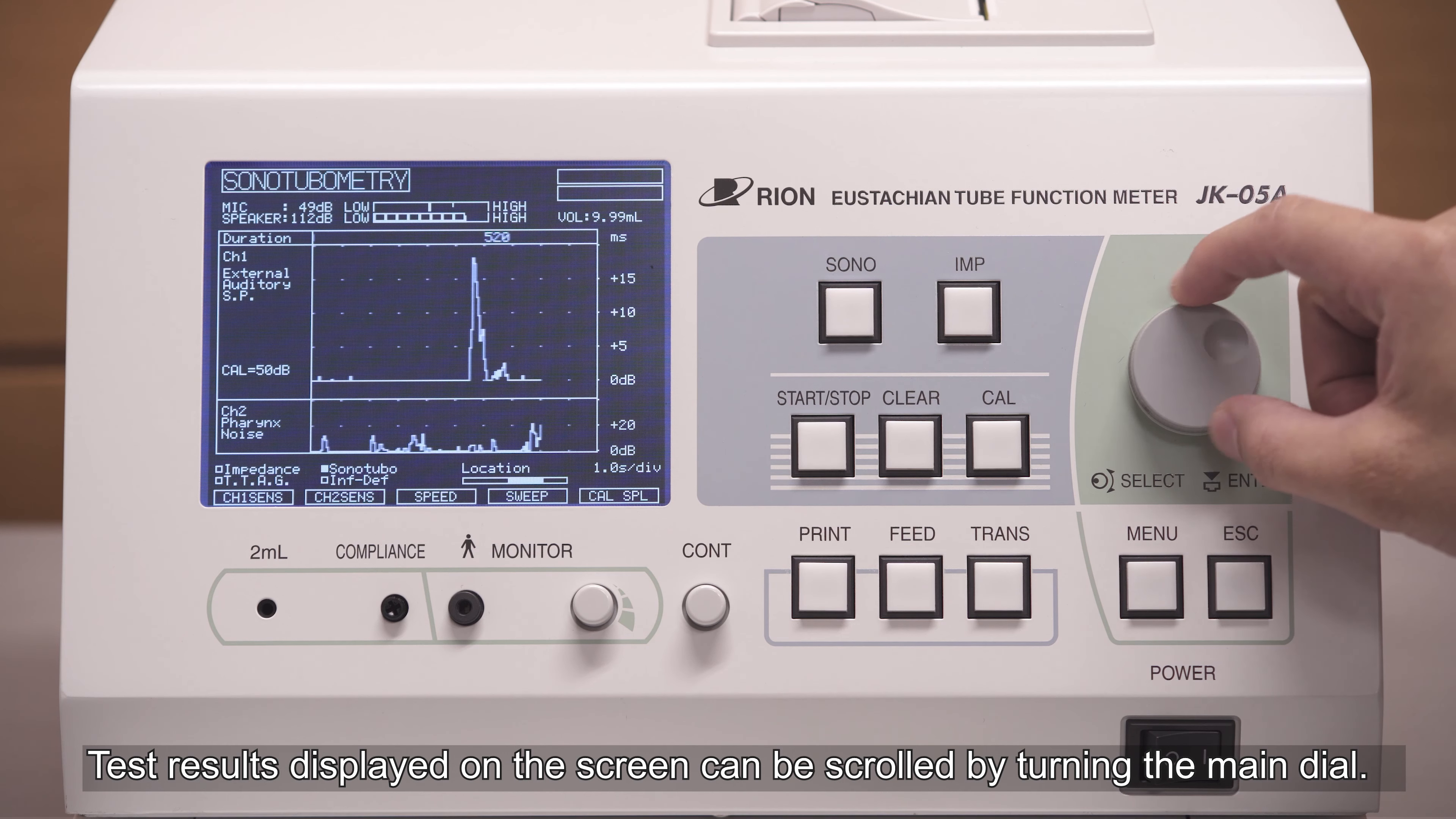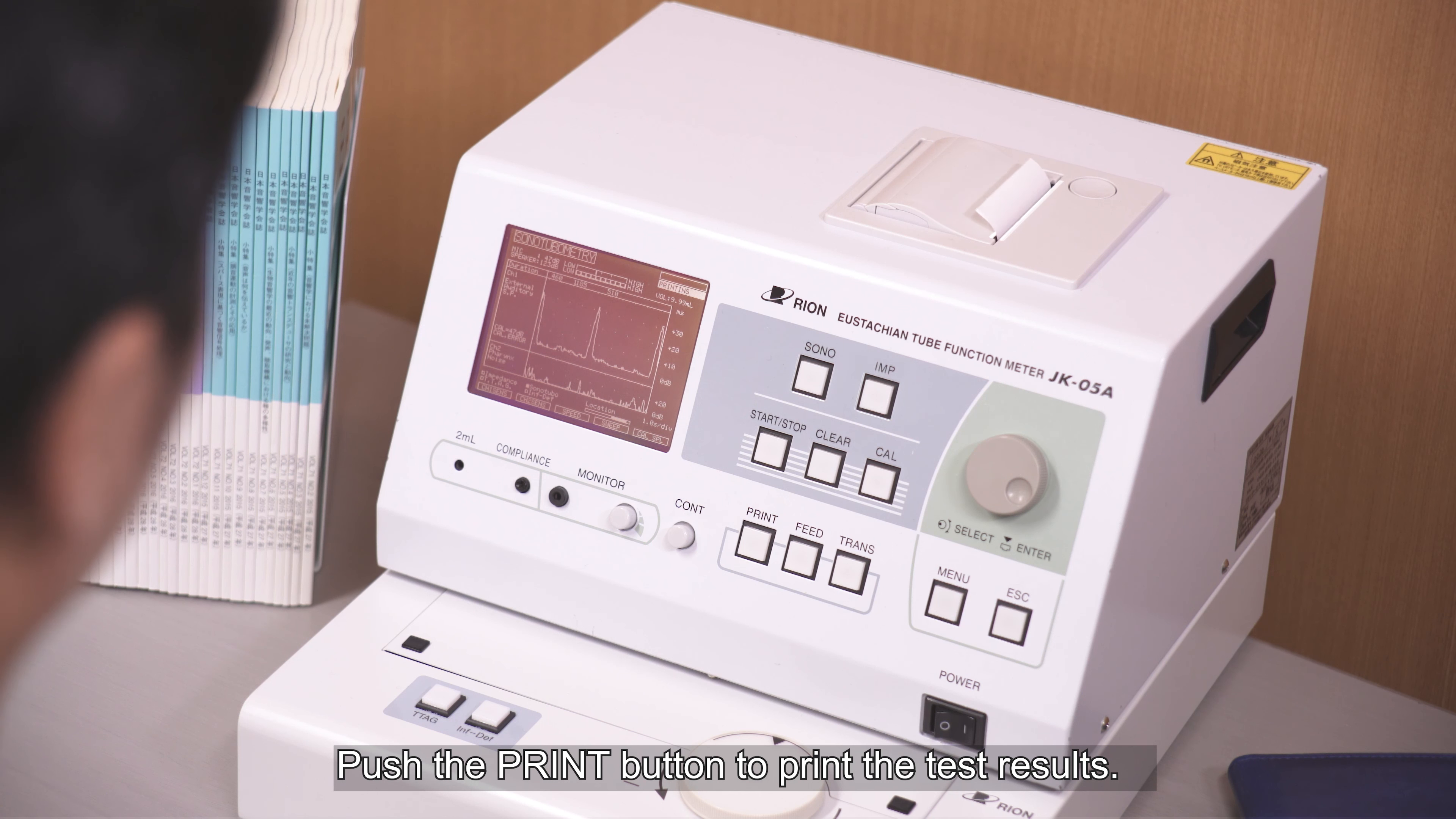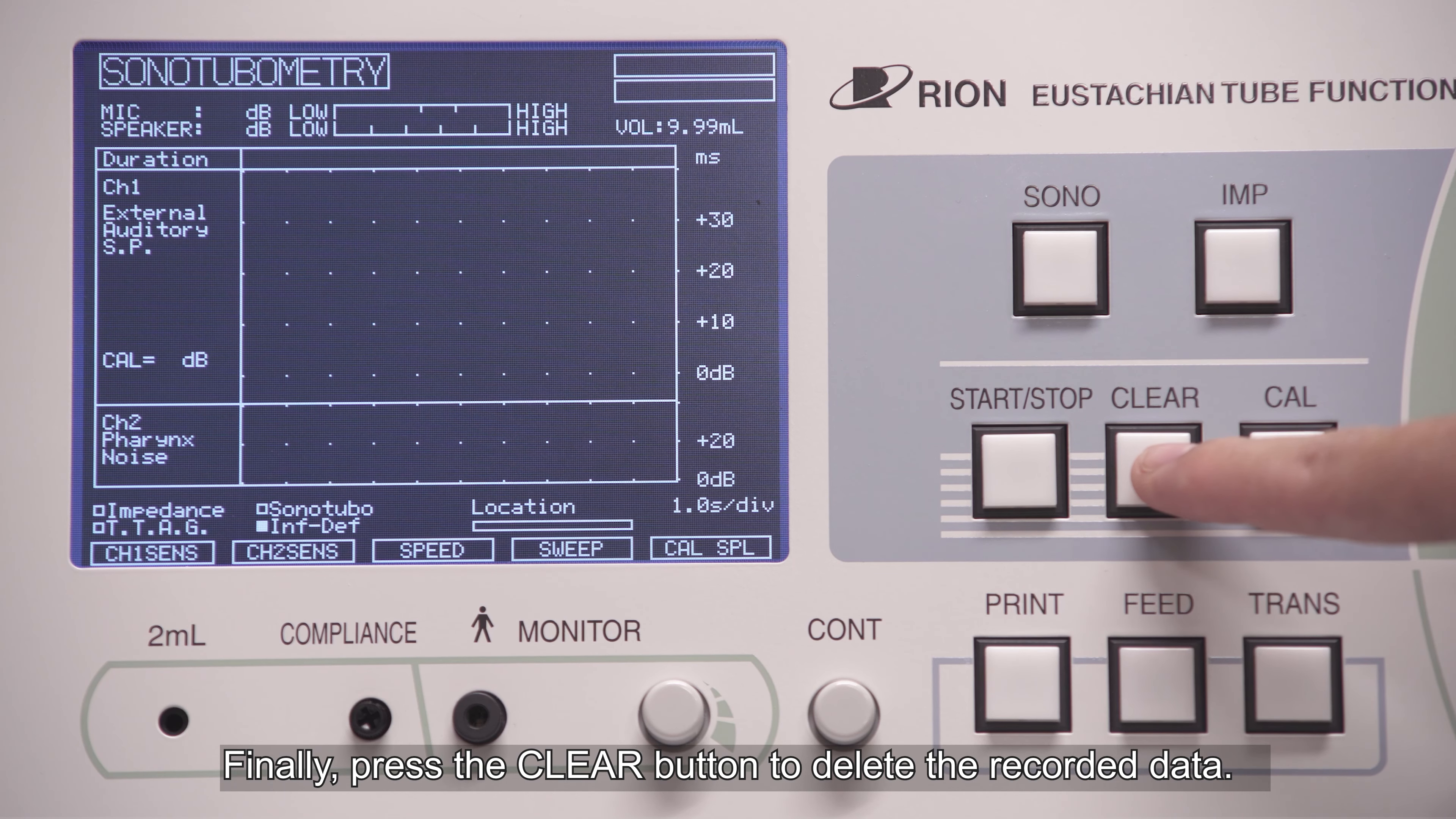Test results displayed on the screen can be scrolled by turning the main dial. Push the print button to print the test results. Finally, press the clear button to delete the recorded data.